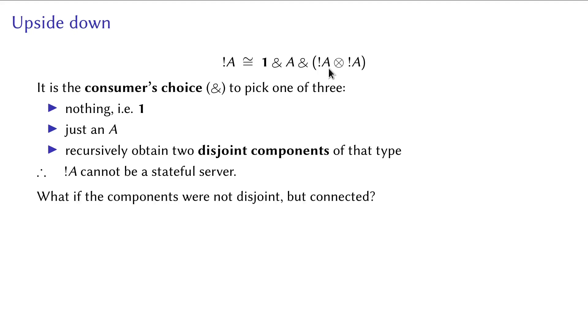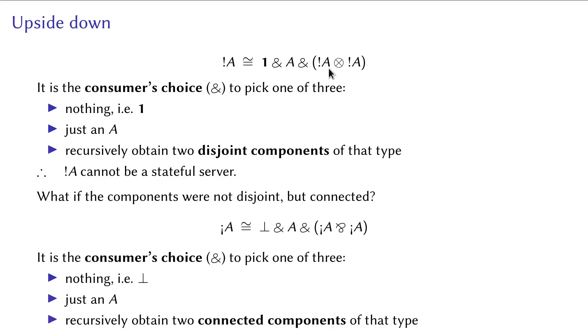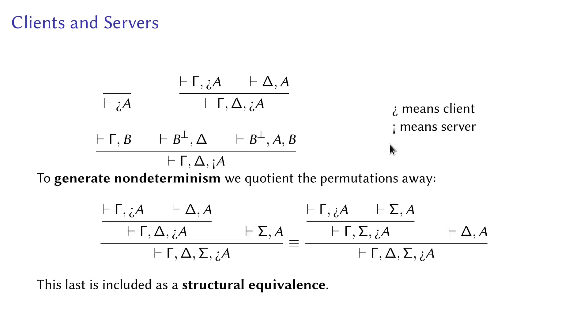In contrast, in the encoding of co-exponentials, we have the two sub-servers connected by par, which represents connected concurrency. There can therefore be communication between the two sub-servers, which forms a stateful server.